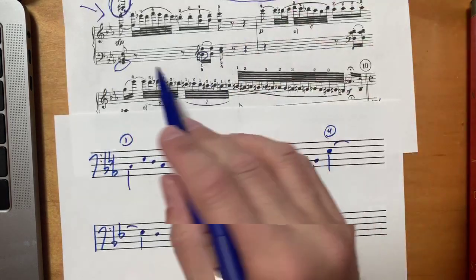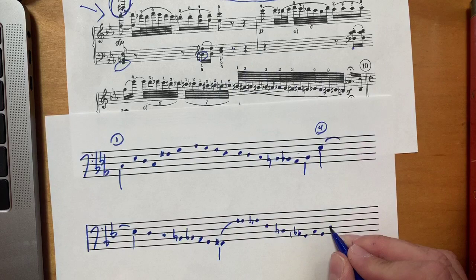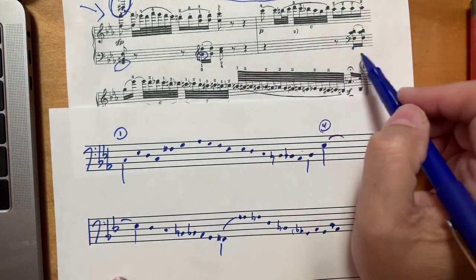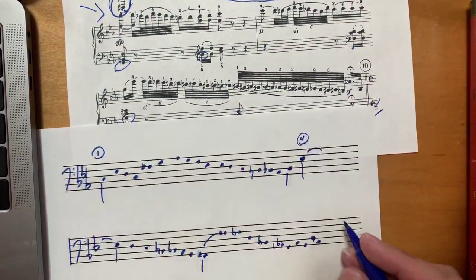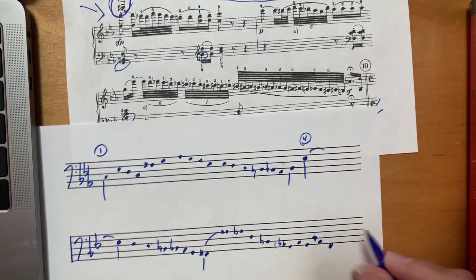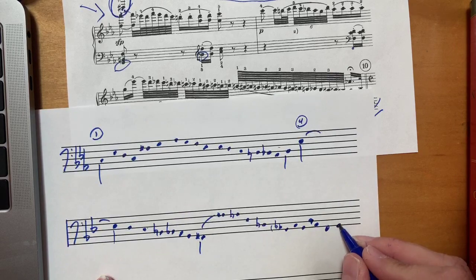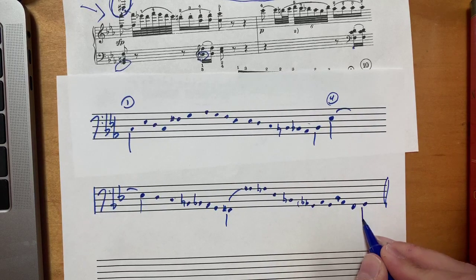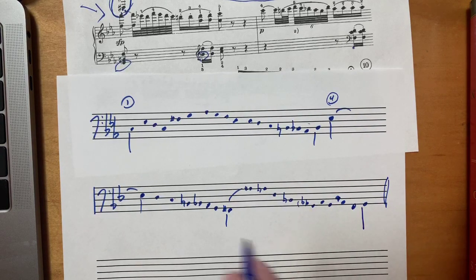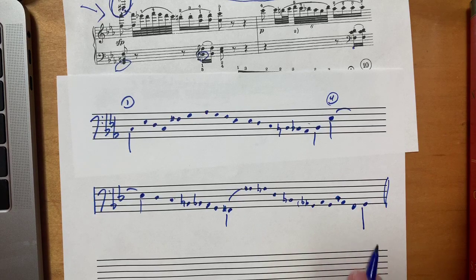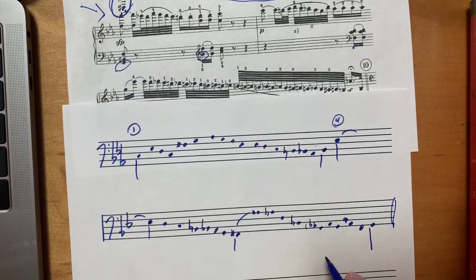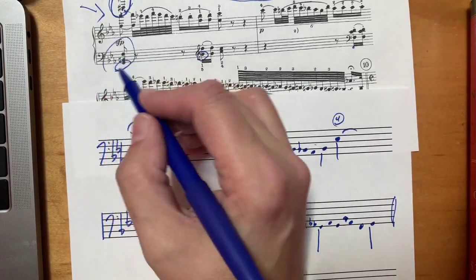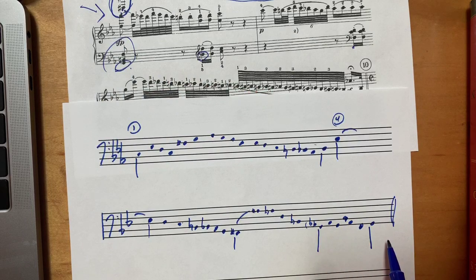And then A-flat, A-flat, F, G. Okay, and this G at the end is our big five. Although to be honest I would probably put it here because the G arrives strongly at this point and this is all prolongation of the G.